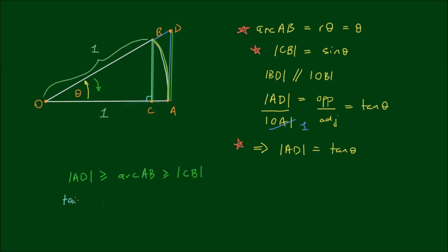So here the absolute value of AD is equal to tan theta which is greater than or equal to the arc length of AB which equals theta which is greater than or equal to the absolute value of CB which is equal to sin theta. Tan theta can be expressed as sin theta over cos theta.